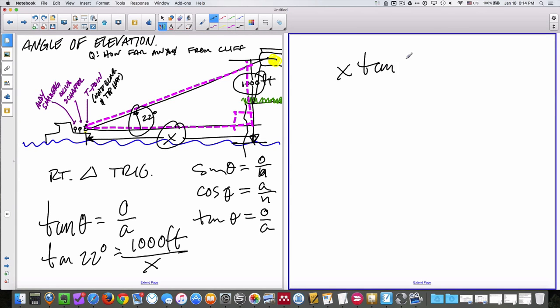Now, note the variables in the denominator. I'm going to multiply both sides by X. Once I multiply both sides by X, I will be left with 1,000 feet on the right and tangent 22 degrees times X on the left.